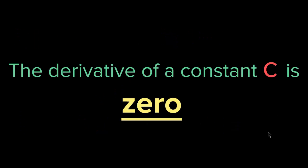Therefore, the derivative of a constant c is zero. No matter what kind of c you have, no matter what kind of constant you have, what kind of number you have, you still get zero when you differentiate that function.